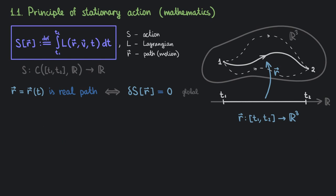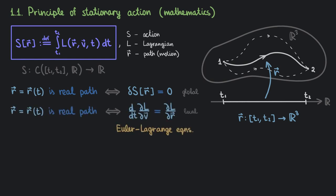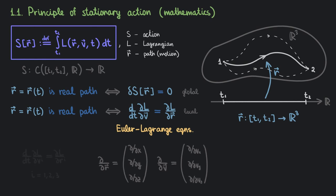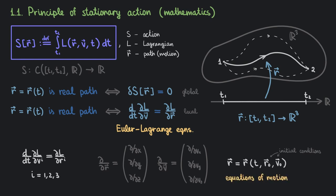The stationary action principle is a global statement about the mechanical system, but we can derive local conclusions from it. These are the Euler-Lagrange equations. If a path makes the action stationary, it also must satisfy the Euler-Lagrange equations. The vector derivatives here are just a way to make the equations look more compact — we could use indices instead, or write down all three equations explicitly. So we have a system of second-order differential equations, and the solution would require initial conditions. This solution gives us the equations of motion for our system — that is, some function R of time, initial coordinates, and initial velocities.